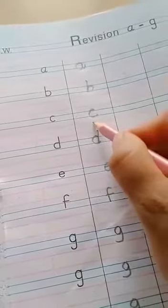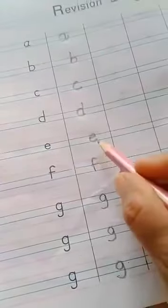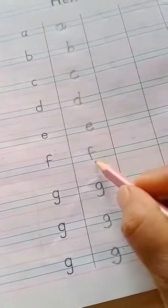A for Apple, B for Ball, C for Cat, D for Dog, E for Elephant, F for Fan, G for Grapes. Okay. G for Grapes.